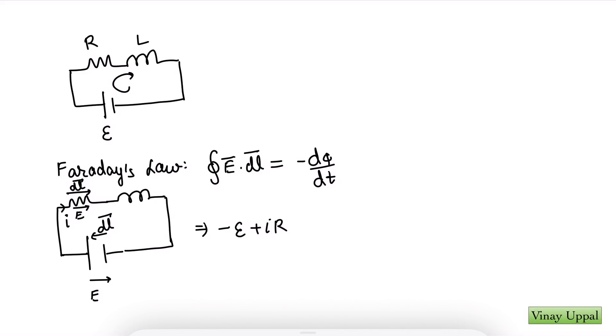how will I write E dot dL? So this is a pure inductor. Now what is a pure inductor? It means it has no resistance. So resistivity is zero. Now I know Ohm's law states that J is equal to sigma E. J is current density, sigma is conductivity.